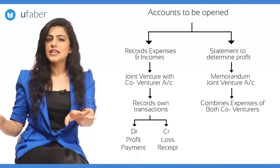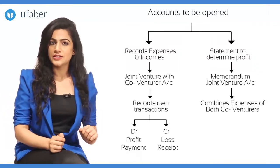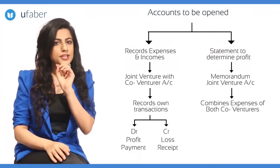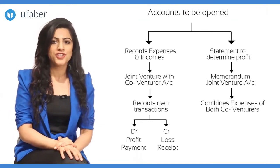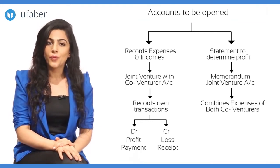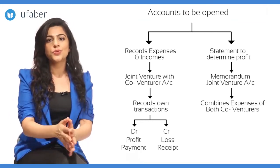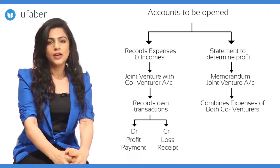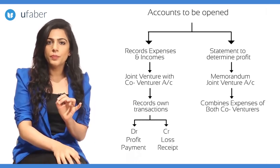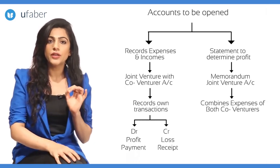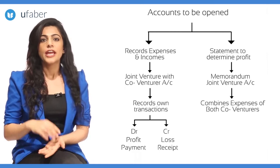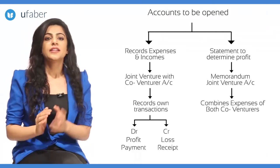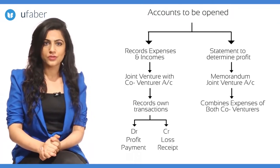Now let's proceed to understand the journal entries. We will take the example of XY Joint Venture and continue to account for entries in the books of X. We will be opening the Joint Venture with Y Account in the books of X, along with the Memorandum Joint Venture Account.